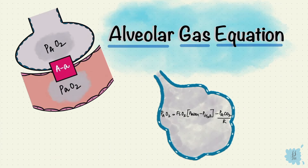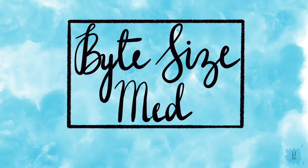And that is the alveolar gas equation and the AA gradient. If this video helped you, give it a thumbs up, share, and subscribe. Thanks for watching, and I'll see you in the next one.